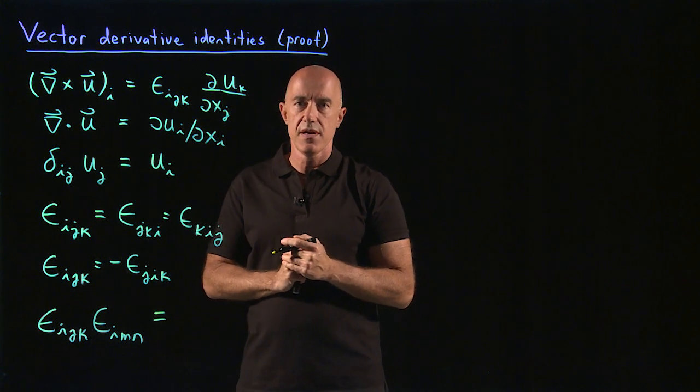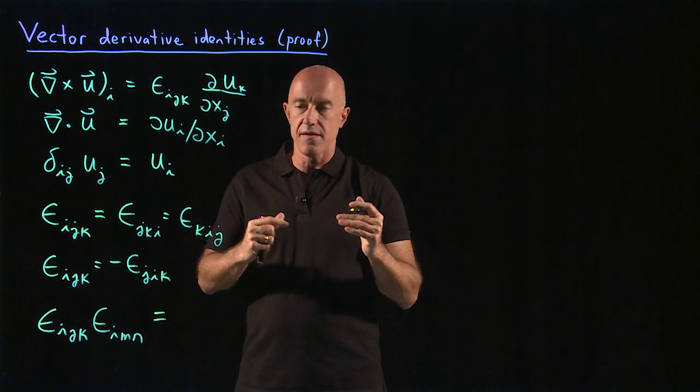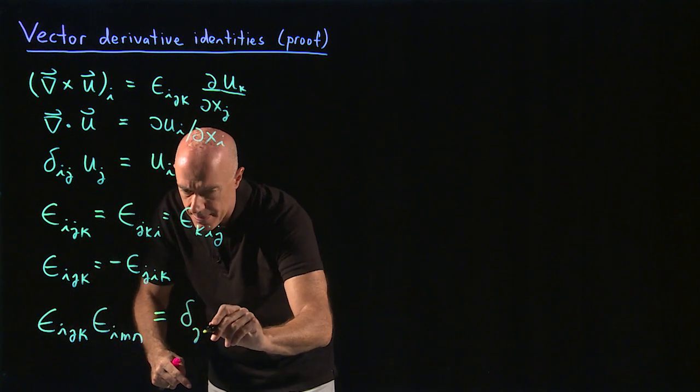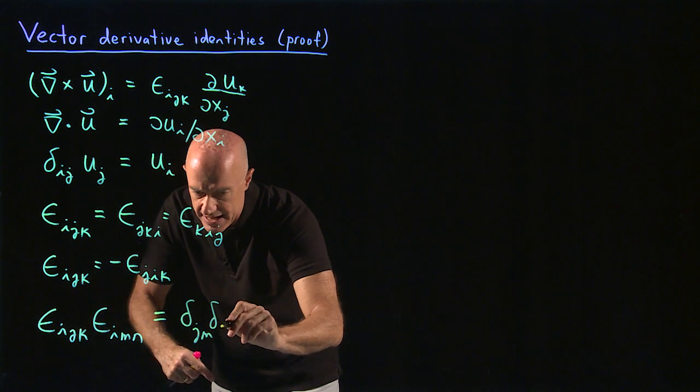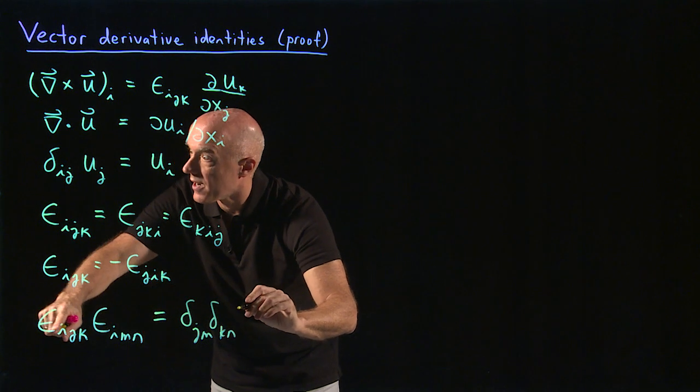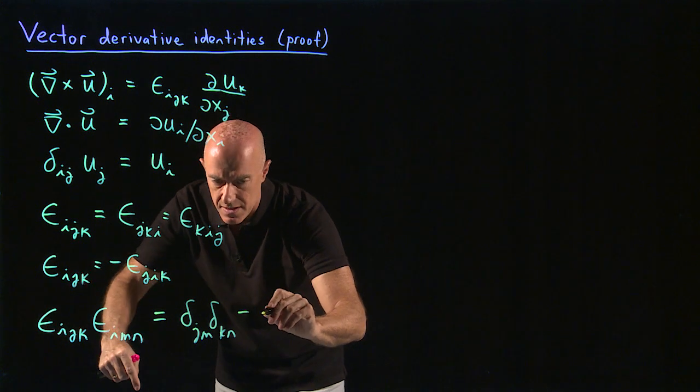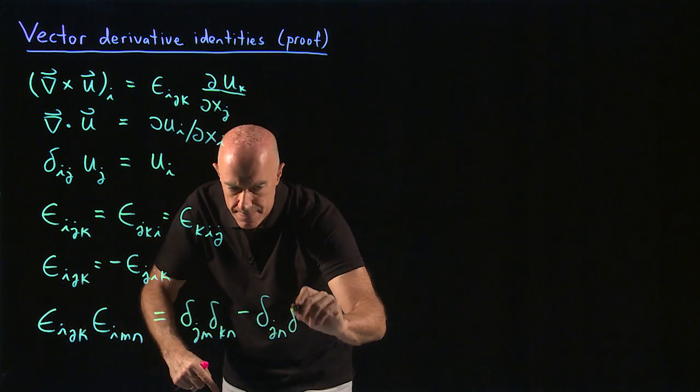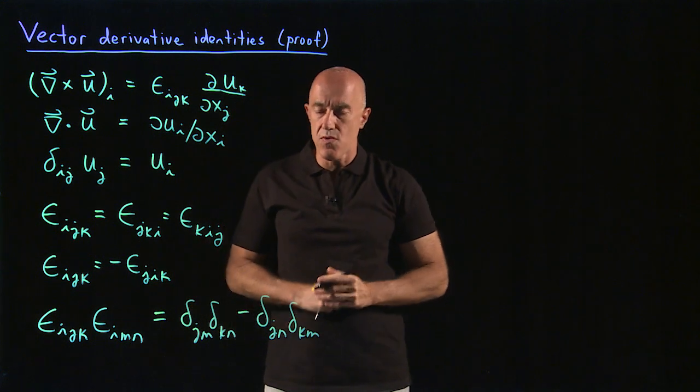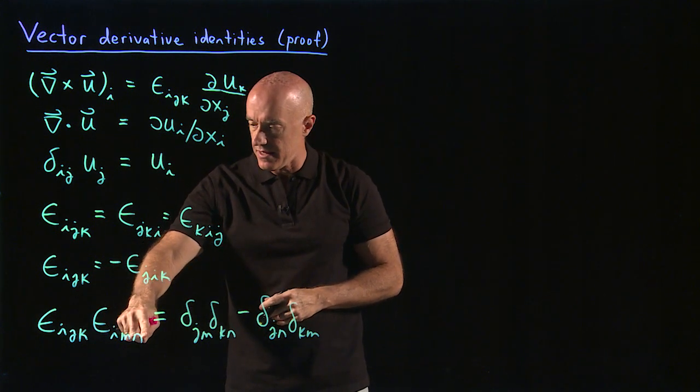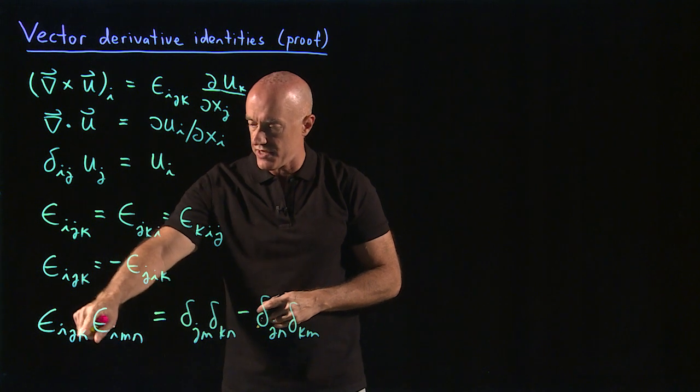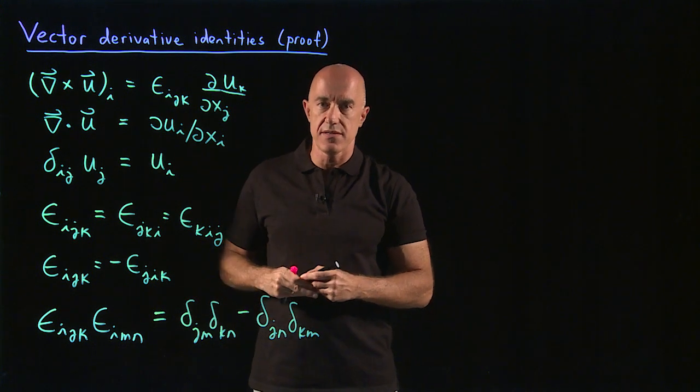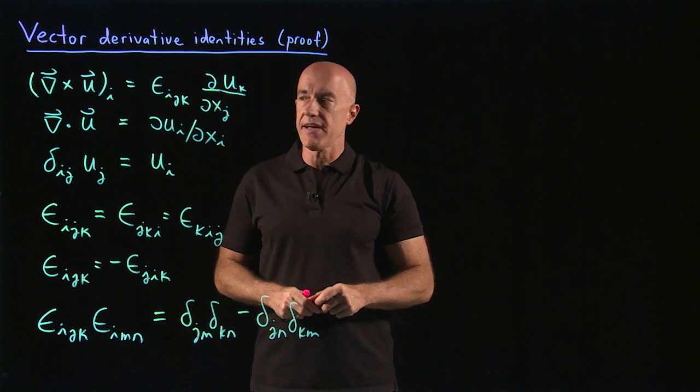This becomes products of the Kronecker delta. This will be delta_jm delta_kn minus delta_jn delta_km. So if you want, you can remember this. It's just jm, kn, and then minus where the order is switched, jn, km. So that will turn out to be useful in some of the proofs of those vector identities.